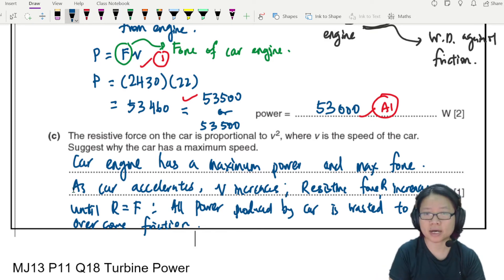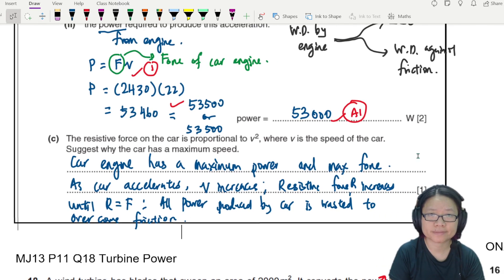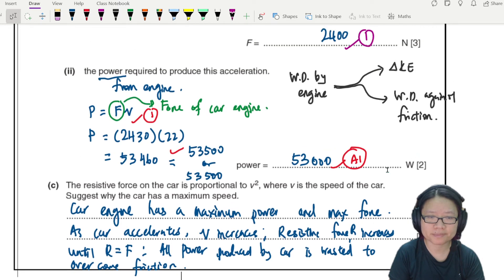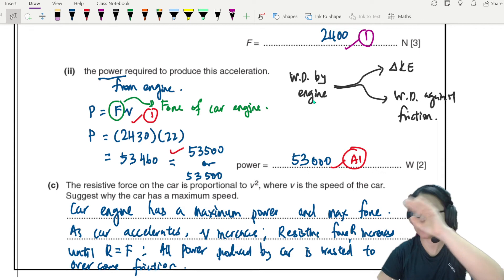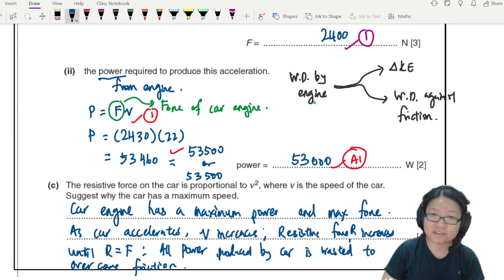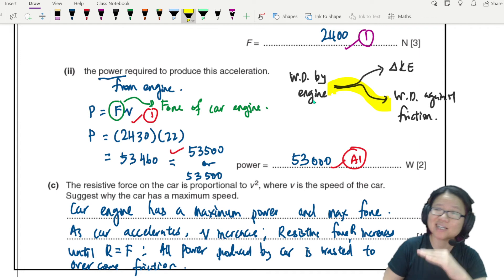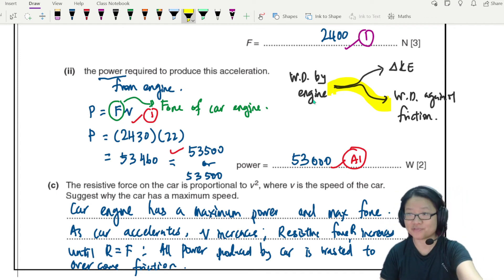to overcome friction. Wasted as heat to overcome friction. If you think about this particular energy flow diagram, this one here, currently there's some percentage to kinetic energy, there's some percentage to work done against friction. But as you travel faster and faster, this friction will take more and more energy until